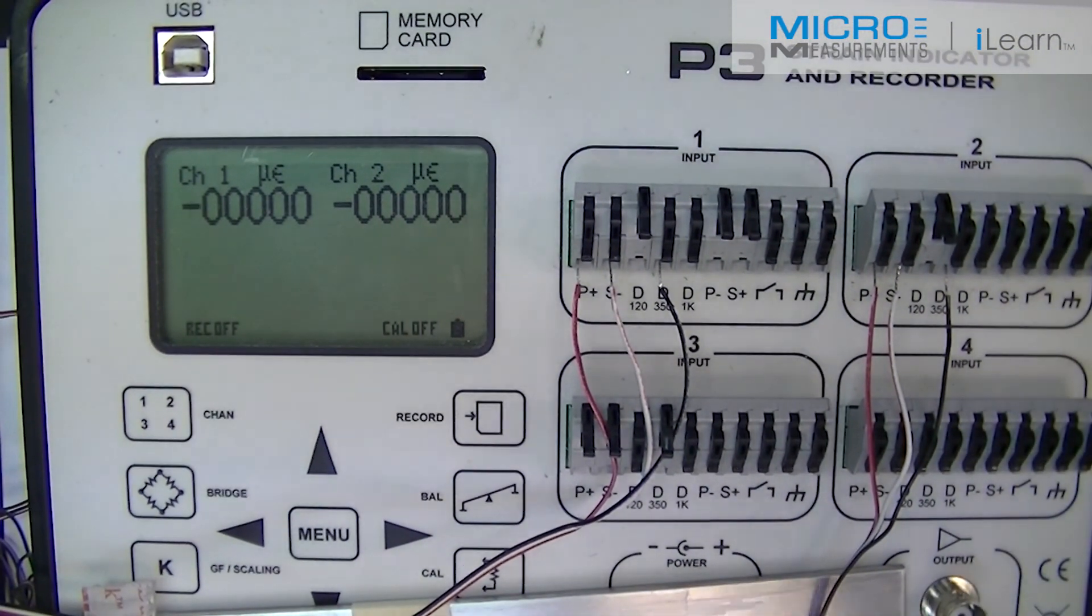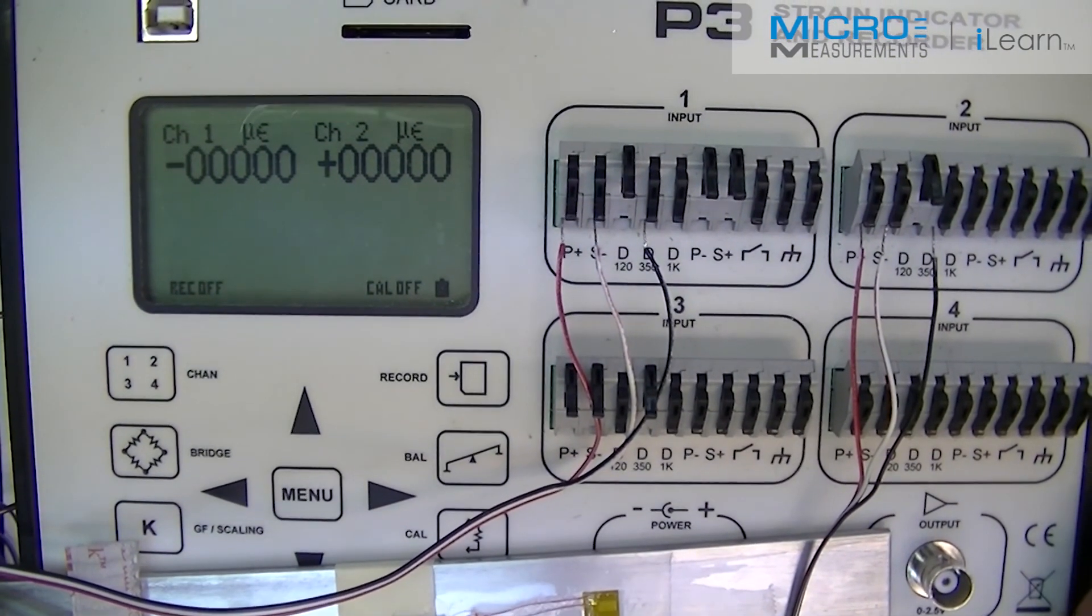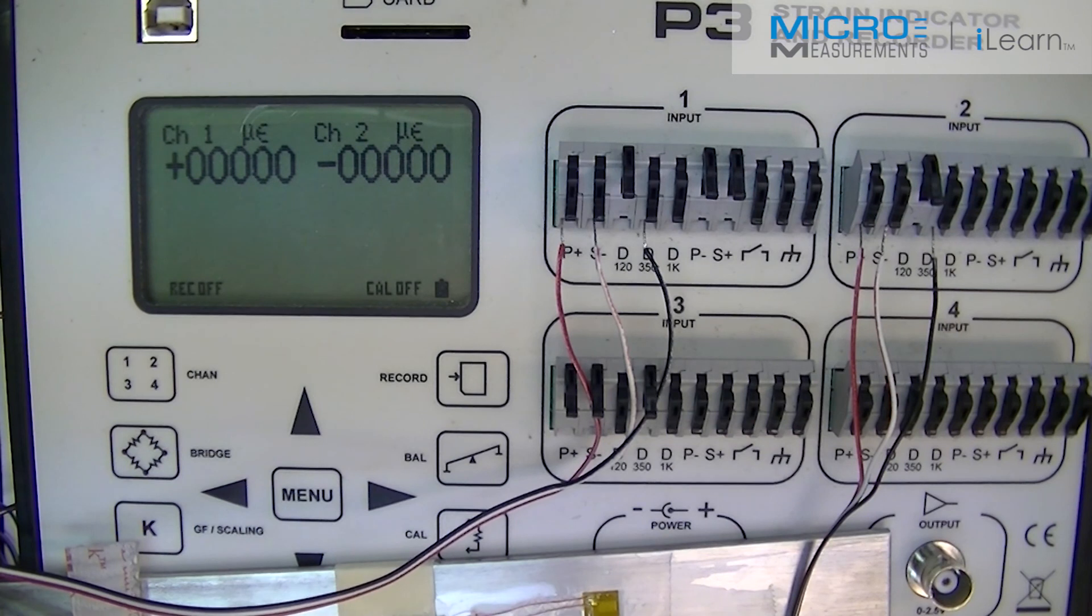What we have done is to do the configuration of the system, to show the channel connected, to show the bridge port for the two rejillas. And finally, to show the band factor, which is the one that indicates in the package of the bandas extensométricas. Once it has done the equilibration, it has saved it.